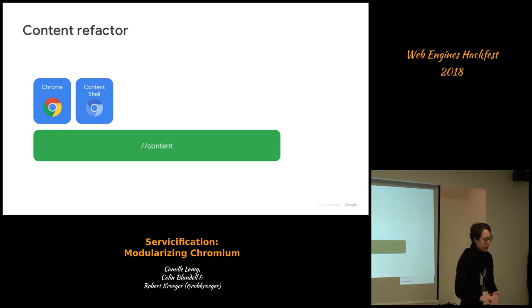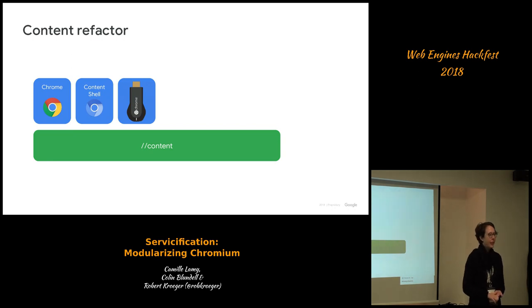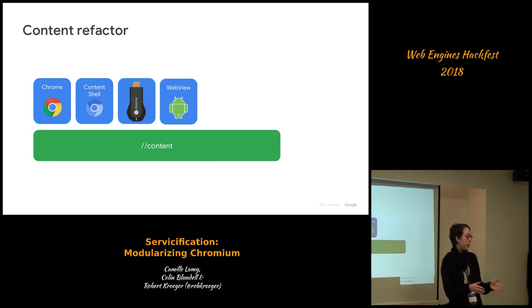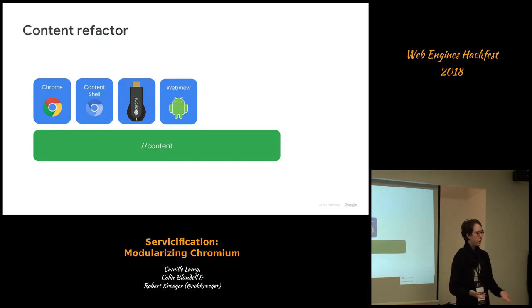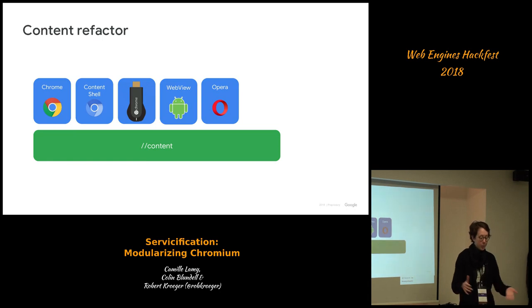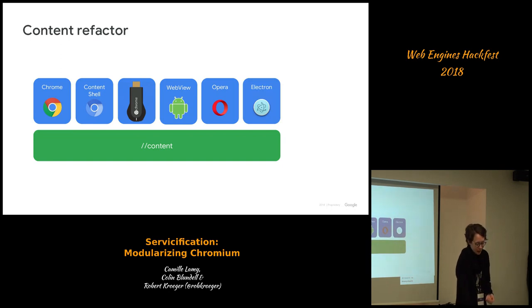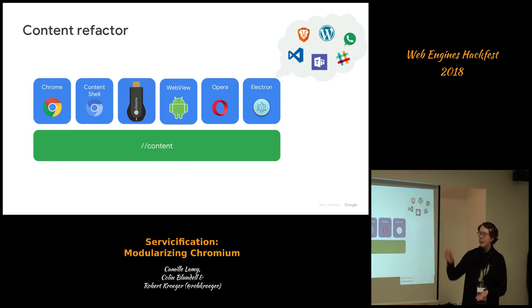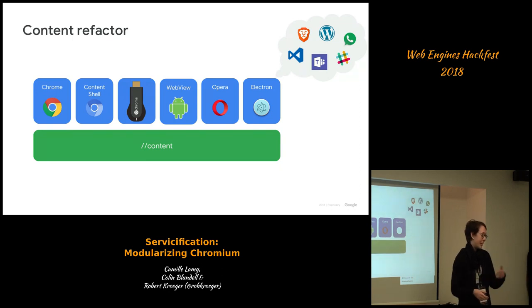We found this was relatively handy — we could build Chromecast on top of it, which is a very different use case from a web browser. We moved the Android WebView to be built on top of content so it could also get all new web features. And since it was open source, other people used what we built, like Opera, which embedded content, and Electron, which also embedded content. Electron then led to a bunch of Electron apps that really don't have anything to do with web browsers. So we've become somewhat more of a platform than a web browser, and this is causing us a bunch of issues.